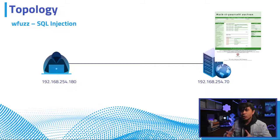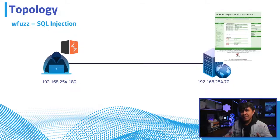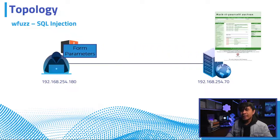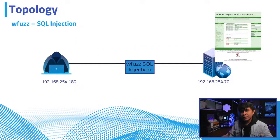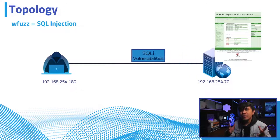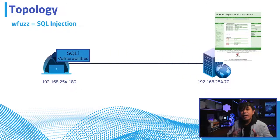The first thing we will do is get some parameter names used by our target web server, which is the HackIt auction site, and we'll be using Burp Suite. Then we're going to run web fuzzing using wfuzz. We'll execute an attack using the collected parameters, and the end result is we should be able to successfully find an SQL injection vulnerability.